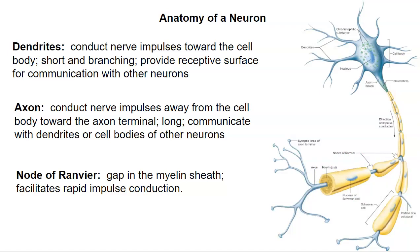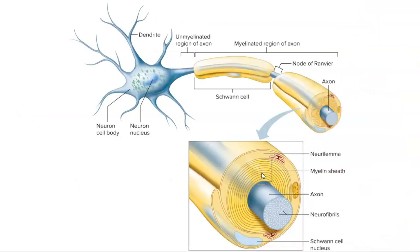Because of saltatory conduction at the nodes of Ranvier, some large neurons can transmit an impulse at 120 meters per second — over the length of a football field in one second. Here's a close-up view of myelination: a Schwann cell wraps around the axon, with the phospholipid plasma membrane of the Schwann cell forming multiple layers, and the folding of the cytoplasm is what forms the myelin sheath.